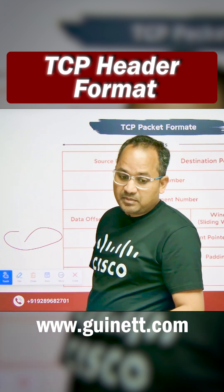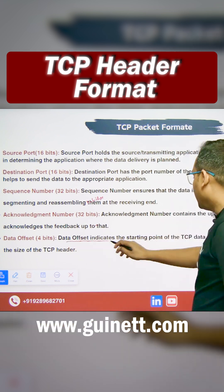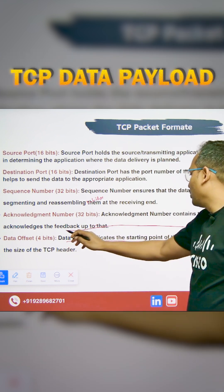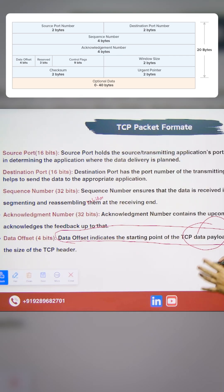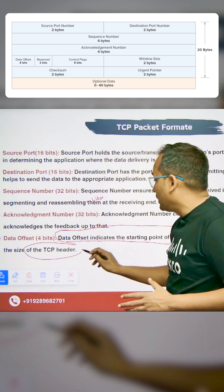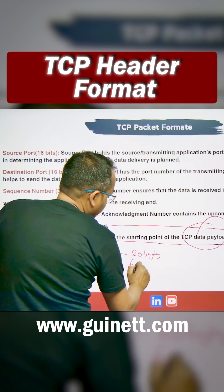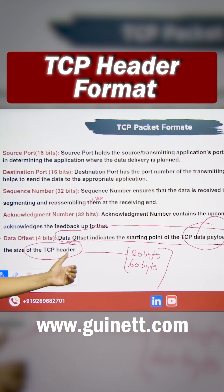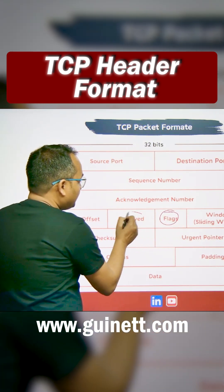We have the data offset, which is four bits. As you can see on the previous slide, the data offset indicates the starting point of the TCP data payload — along with the application information and the payload. The minimum size of the TCP header is 20 bytes and the maximum is 60 bytes, and this data offset field is responsible for storing that information.